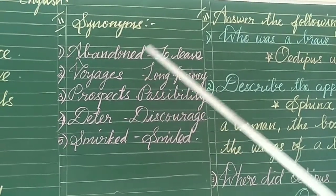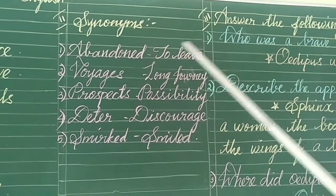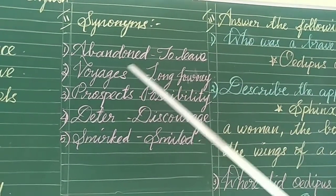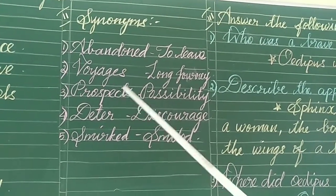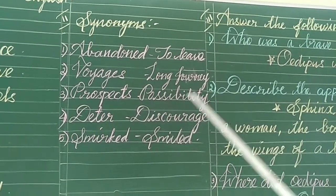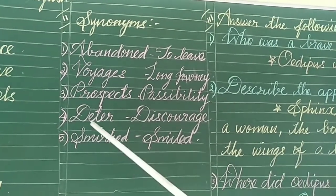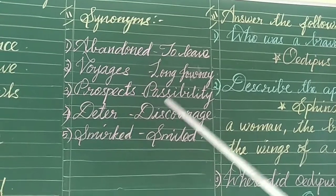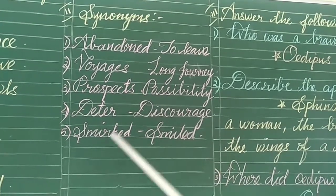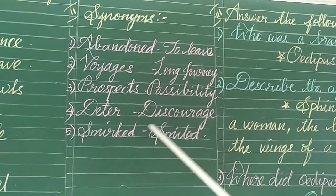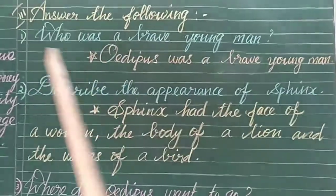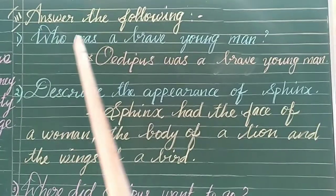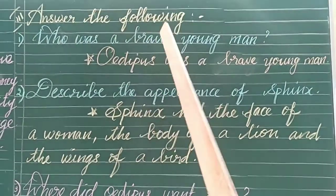Let us see the second Roman's meanings. Abandoned – To Leave. Voyages – Long Journey. Prospects – Possibility. Deter – Discourage. Smith – Smile.